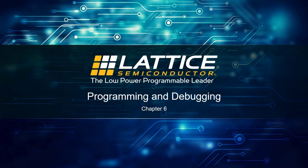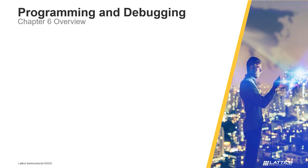Chapter 6: Programming and Debugging. In this section of the Radiant introductory training series, we will discuss the general flow for programming a device and debugging it on physical hardware. Chapter 6 consists of four sections.